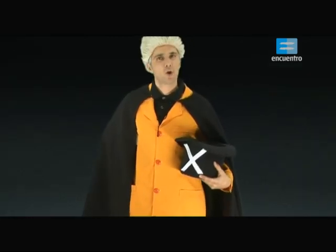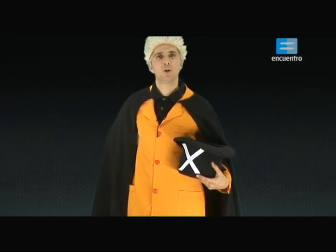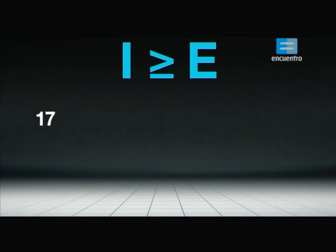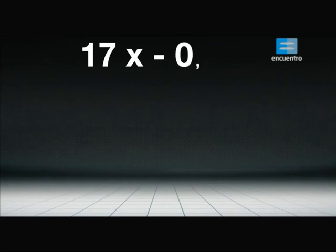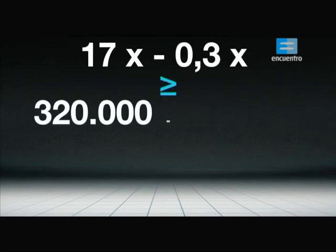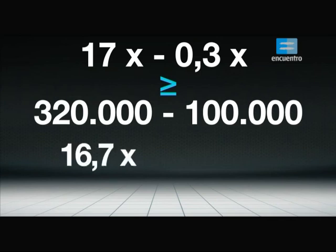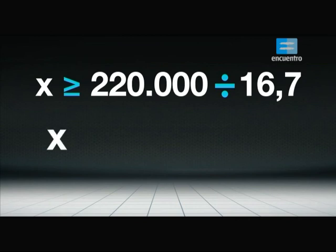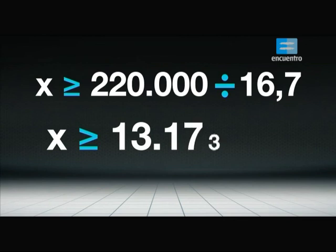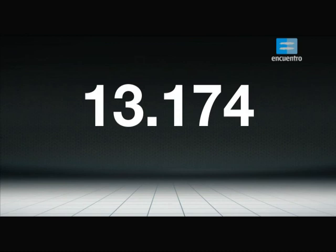Como los ingresos deben ser mayores o a lo sumo iguales que los egresos para no perder dinero: Y mayor o igual que E, es decir, 17X más 100.000 mayor o igual que 0,3X más 320.000. Resolviendo: 17X menos 0,3X mayor o igual que 320.000 menos 100.000; 16,7X mayor o igual que 220.000; X mayor o igual que 220.000 dividido 16,7; X mayor o igual que 13.173,65. Para que a la banda le convenga hacer los 4 recitales, deben vender 13.174 entradas en total.